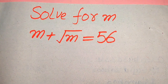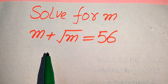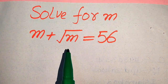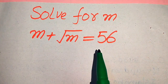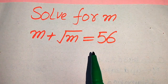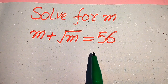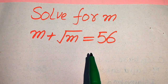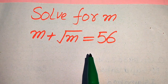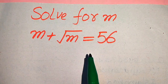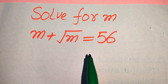Hello everyone. How to solve this problem for the values of m, if we have m plus square root of m is equal to 56. We solve this problem for all the values of m, and at last we will verify which of the values of m are solutions and which of the values of m are extraneous roots.